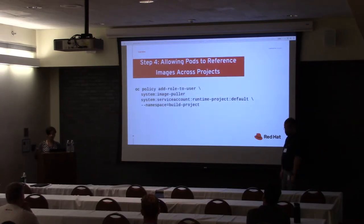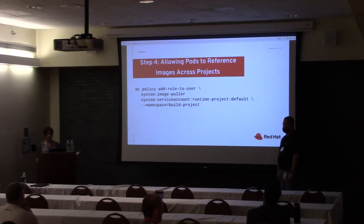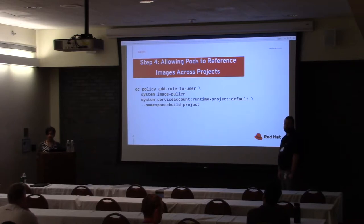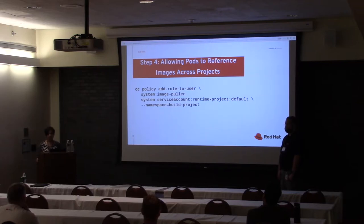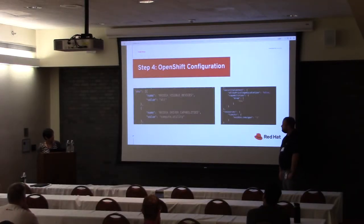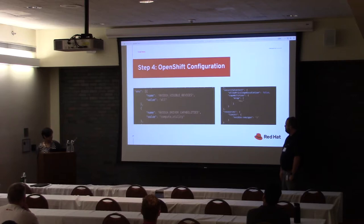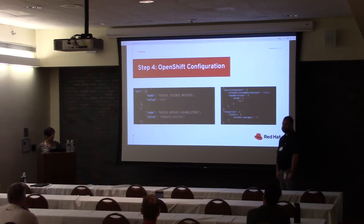In my scenario, the platform running the machine learning workflow is different from the project where the developer created the image. I don't have access to the radiology project where the job framework is running. In this case, you need to grant access to the service account of the project pulling the image from a different project. You also need to configure OpenShift's scheduler to know the container may ask for a GPU resource — setting environment configurations, giving the NVIDIA driver compute and utility capabilities, and specifying in the resources that this pod might require a GPU.